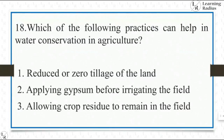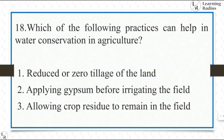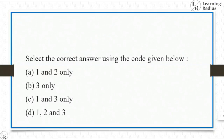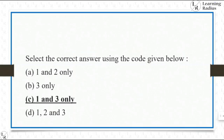Which of the following practices can help in water conservation in agriculture? Statement 1: Reduced or zero tillage of the land — that's right. Statement 2: Applying gypsum before irrigating the field — that's a wrong statement. Statement 3: Allowing crop residue to remain in the field — that's right. The first and third statements are right and the second statement is wrong, so the answer is one and three.